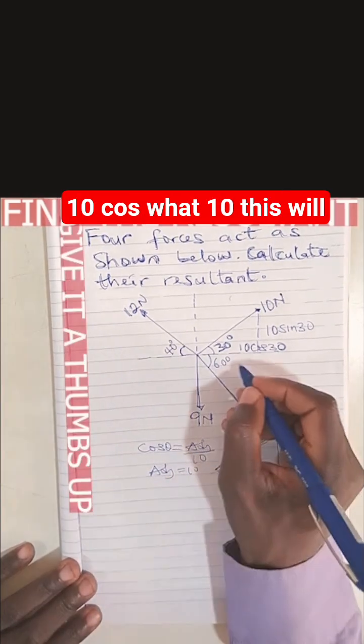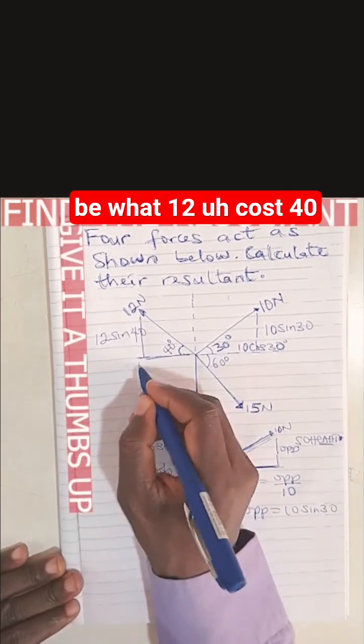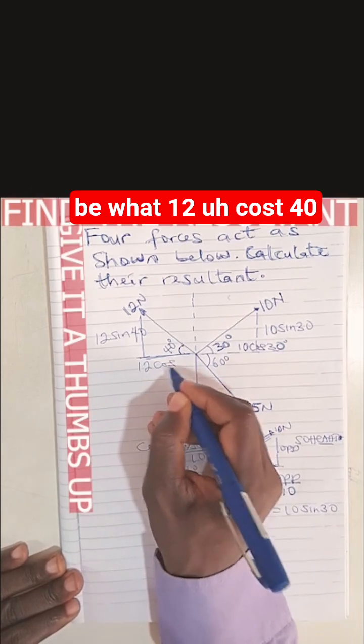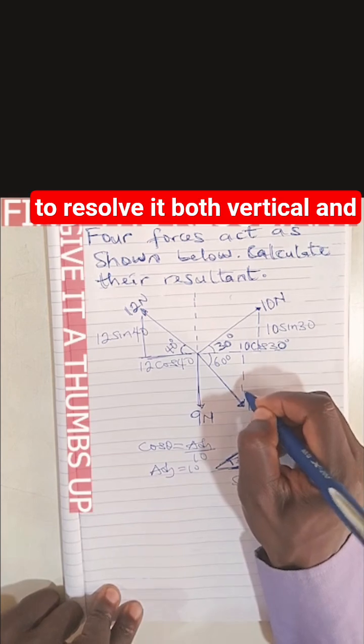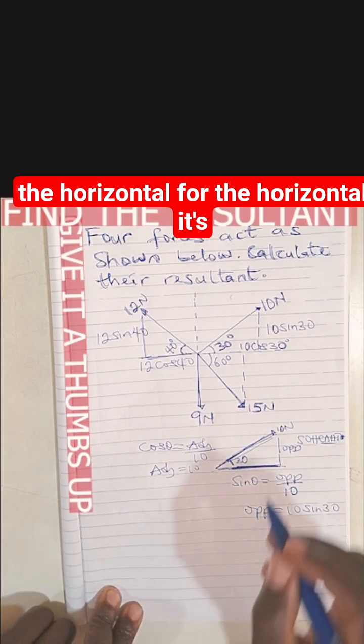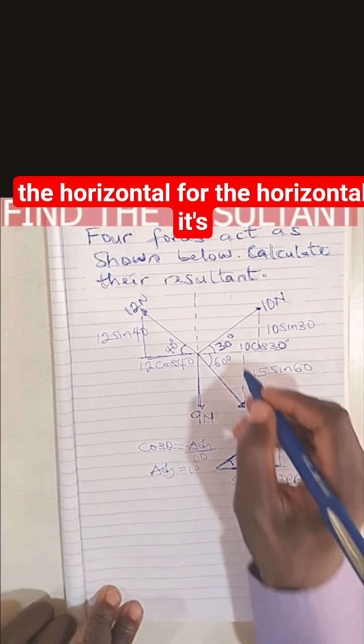This will be 12 cos 40. Let's do it for the 60 degree force. For the 60 degrees, you're going to resolve it both vertically and horizontally. For the horizontal, it's going to be 15 cos 60.